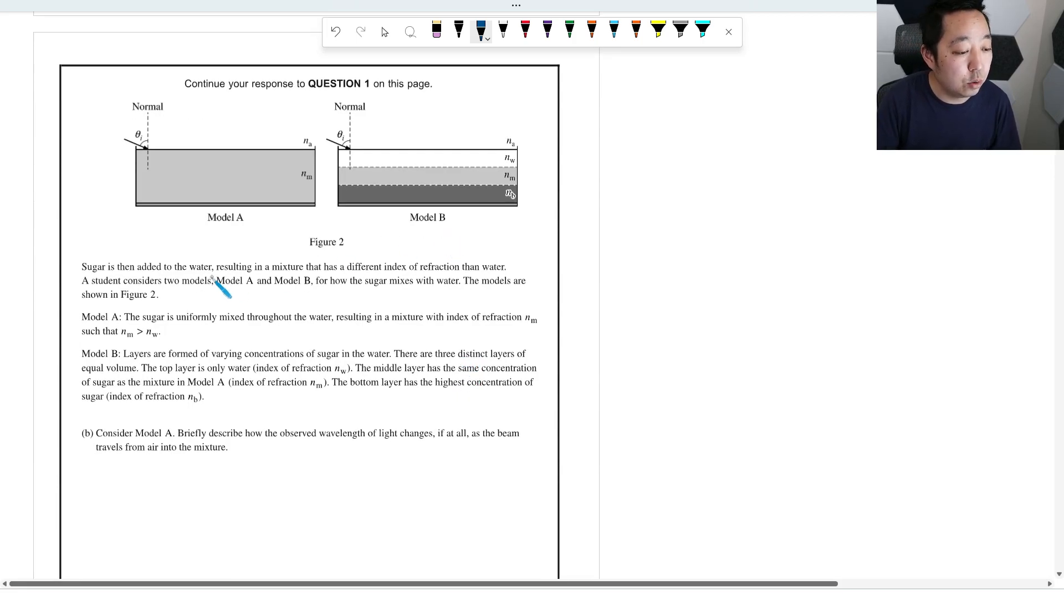Sugar is then added into the water resulting in a different index of refraction than water. A student considers two models, Model A and Model B, for how the sugar mixes with water. Model A, the sugar is uniformly mixed throughout the water, resulting in a mixture of index of refraction NM that is bigger than N water. Model B, layers are formed. Three distinct layers of equal volume. Top layer is NW, middle layer has the concentration NM, and the bottom layer is the highest concentration, NB.